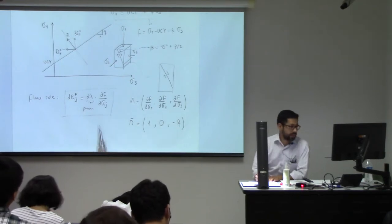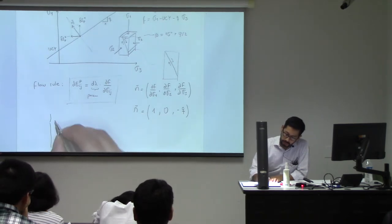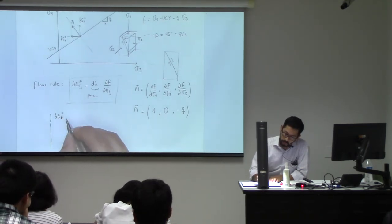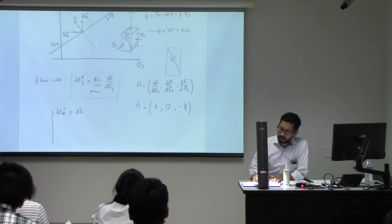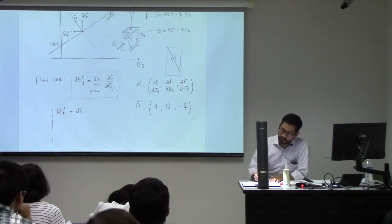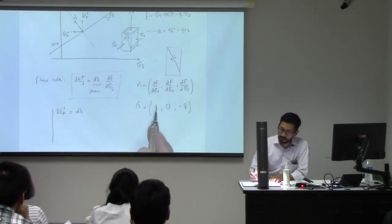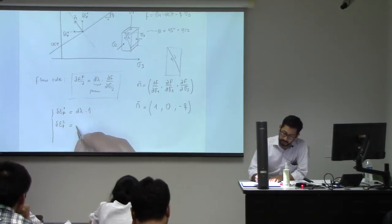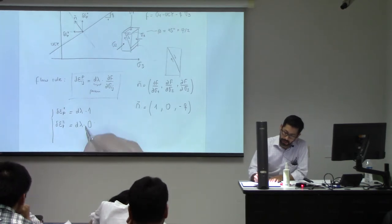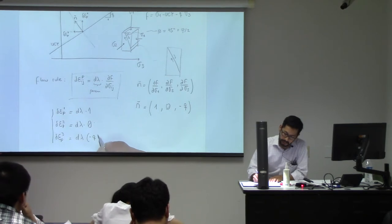Now let's apply this equation for our plastic strains. Plastic strain in direction 1 is just going to be this parameter dλ times df/dσ₁, which is times 1. Direction 2 is going to be dλ times 0, and in direction 3 it is going to be dλ times negative q.